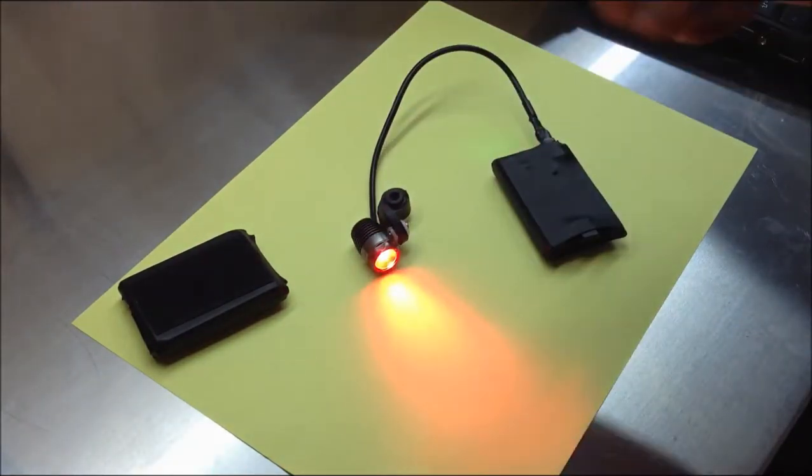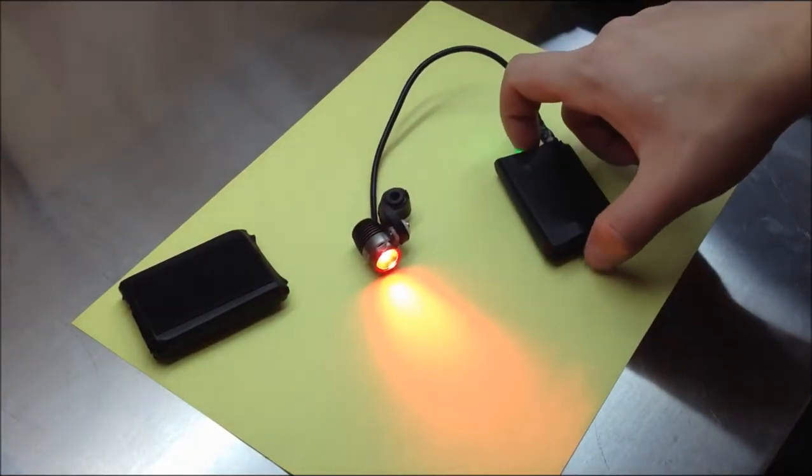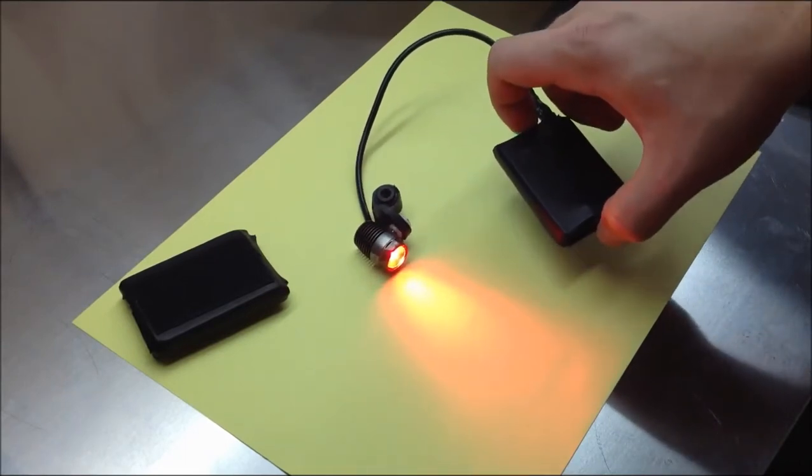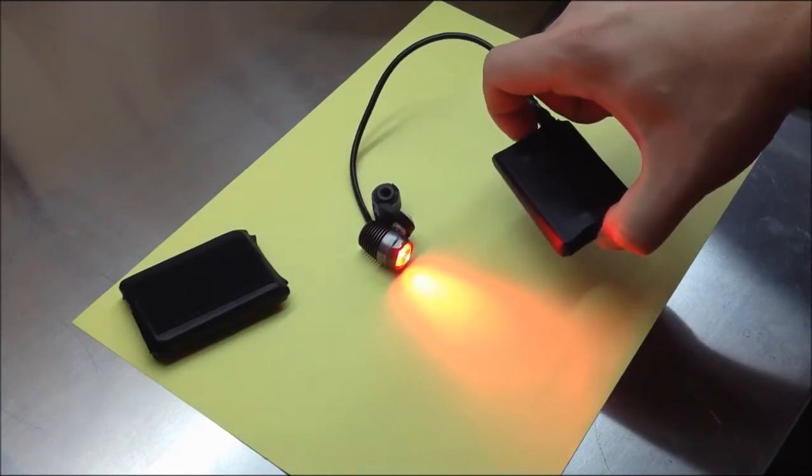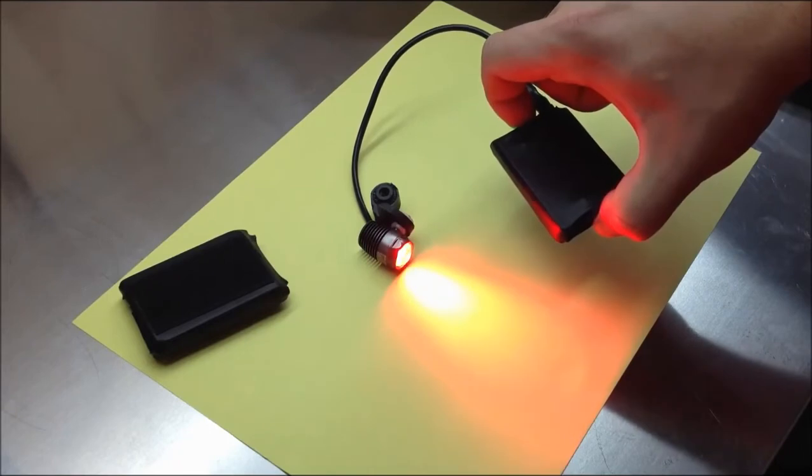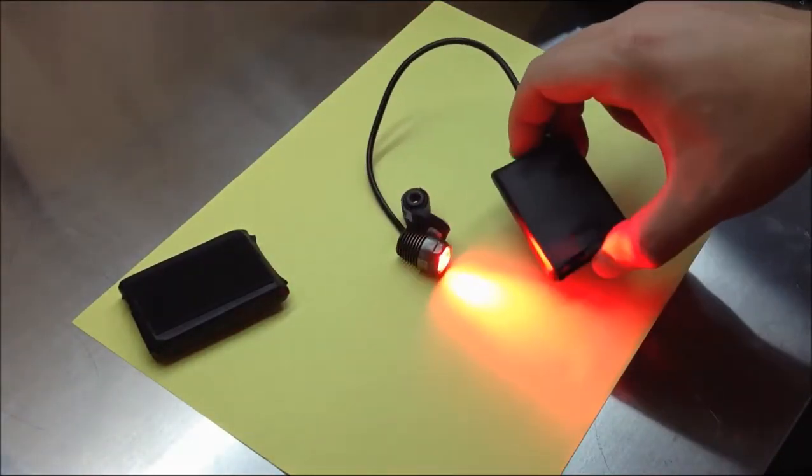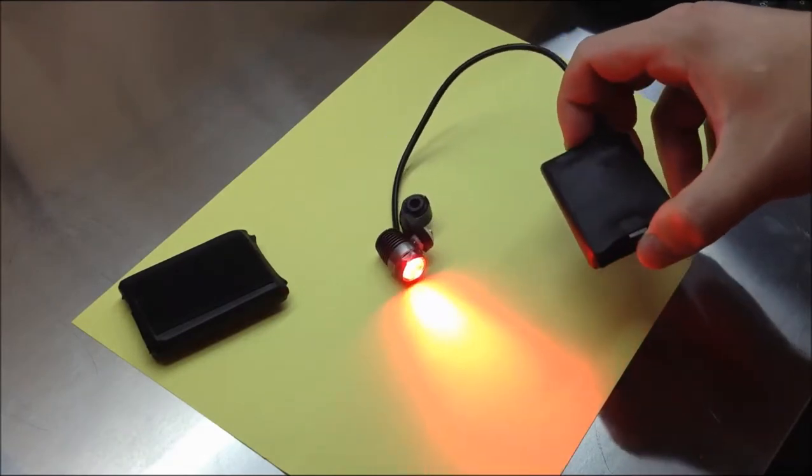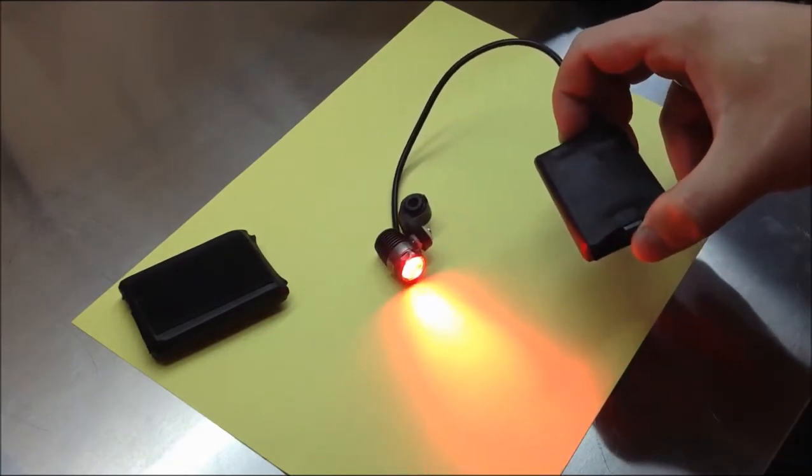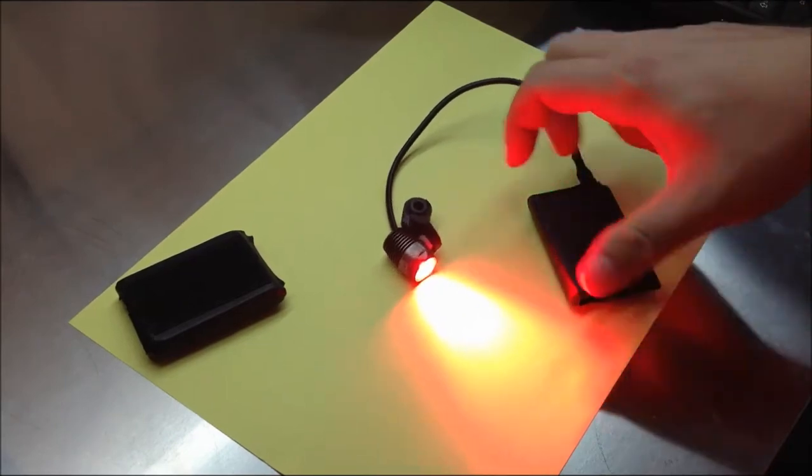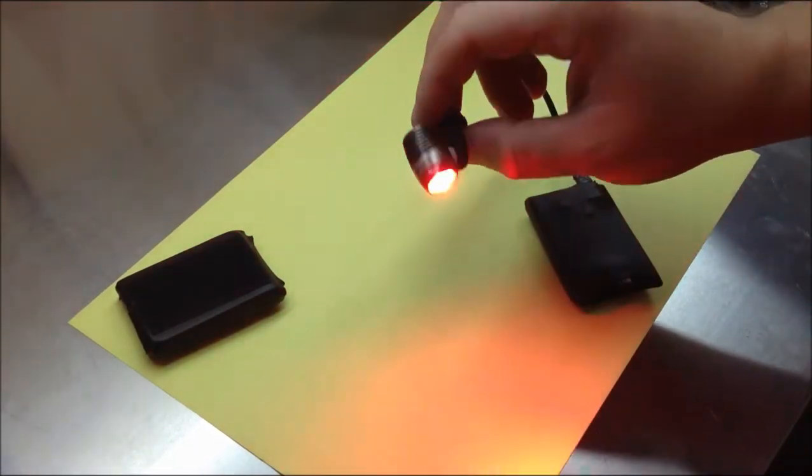To activate the second mode you should keep the button pressed during next two seconds. That's it. It's 50% brightness and the next mode is full mode. So you can see now 100% brightness.